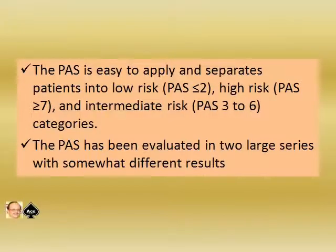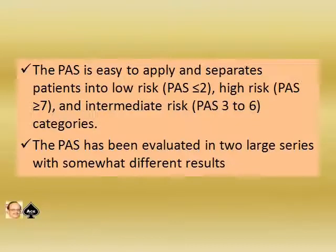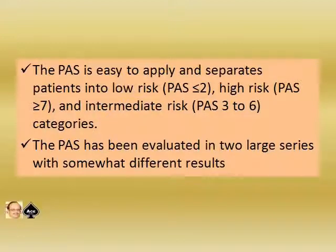The Pediatric Appendicitis Score is easy to apply and separates patients into low risk, high risk, and intermediate risk. A score equal to or less than 2 is low risk. A score equal to or more than 7 is high risk. A score between 3 and 6 is considered intermediate risk.